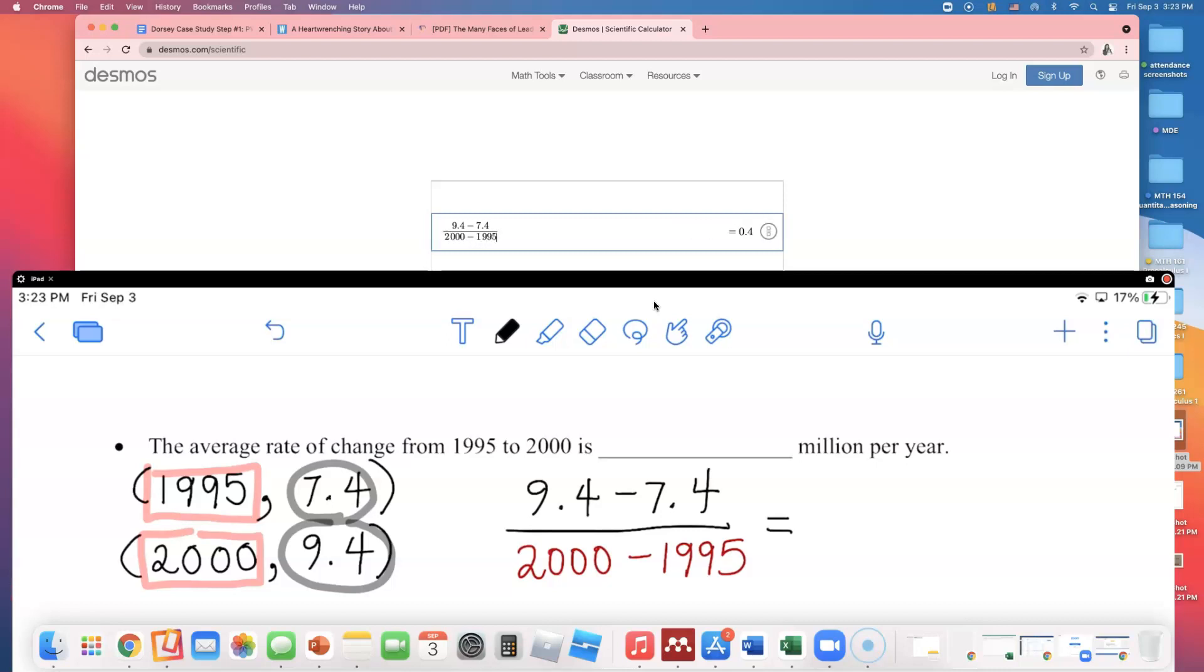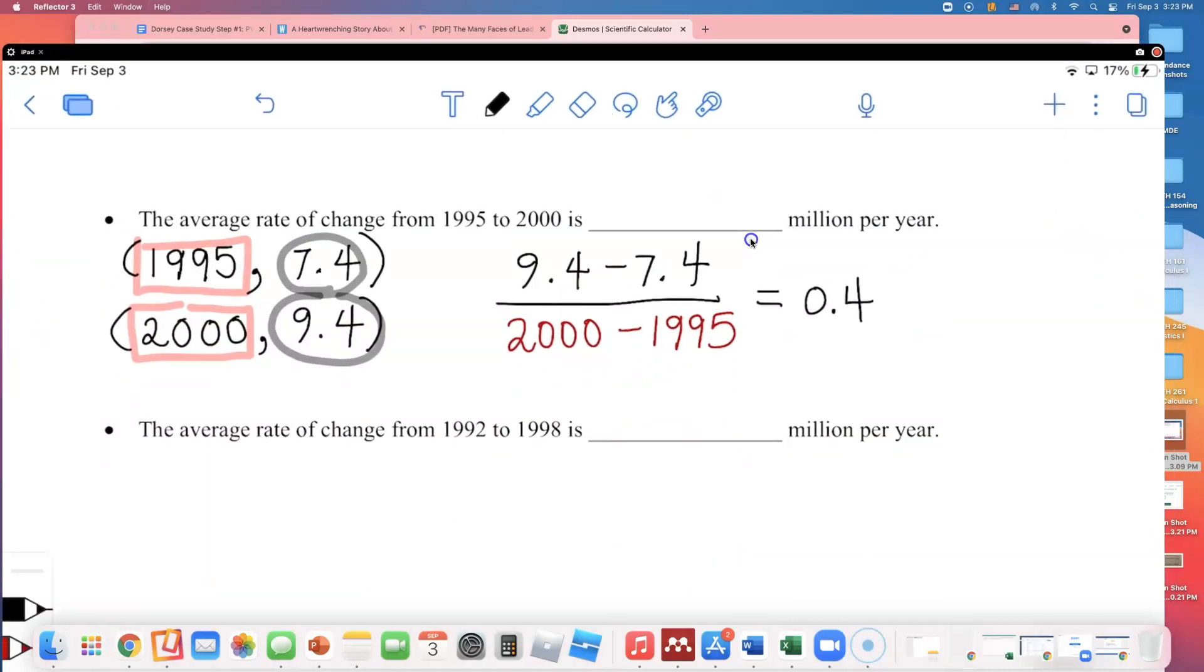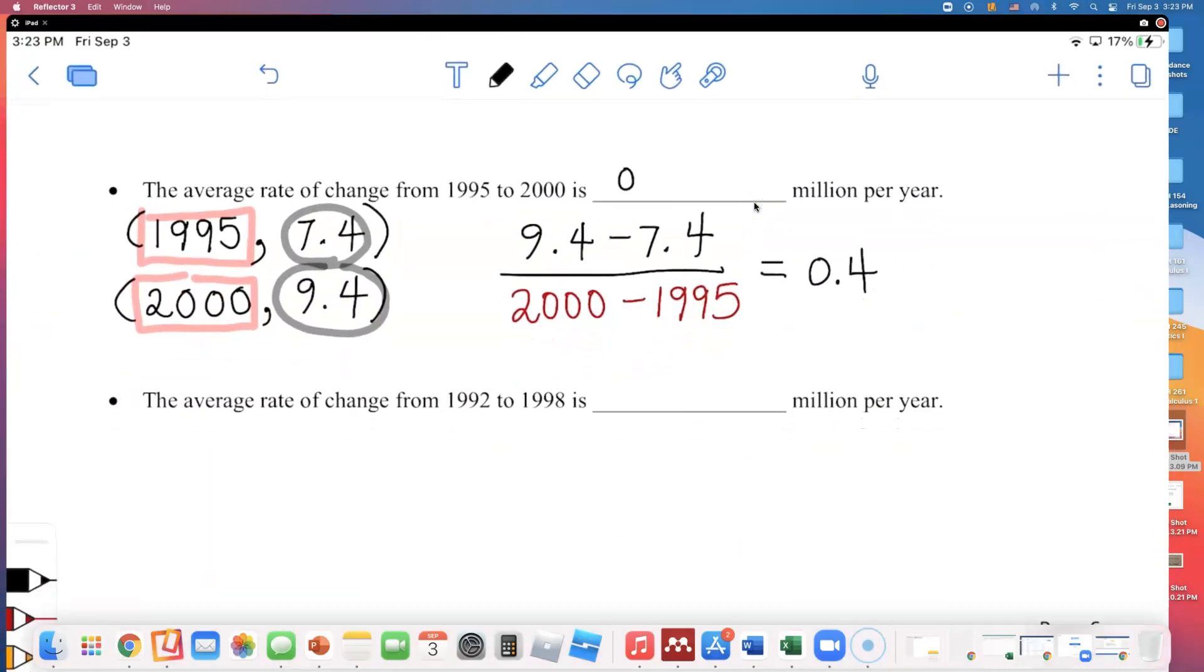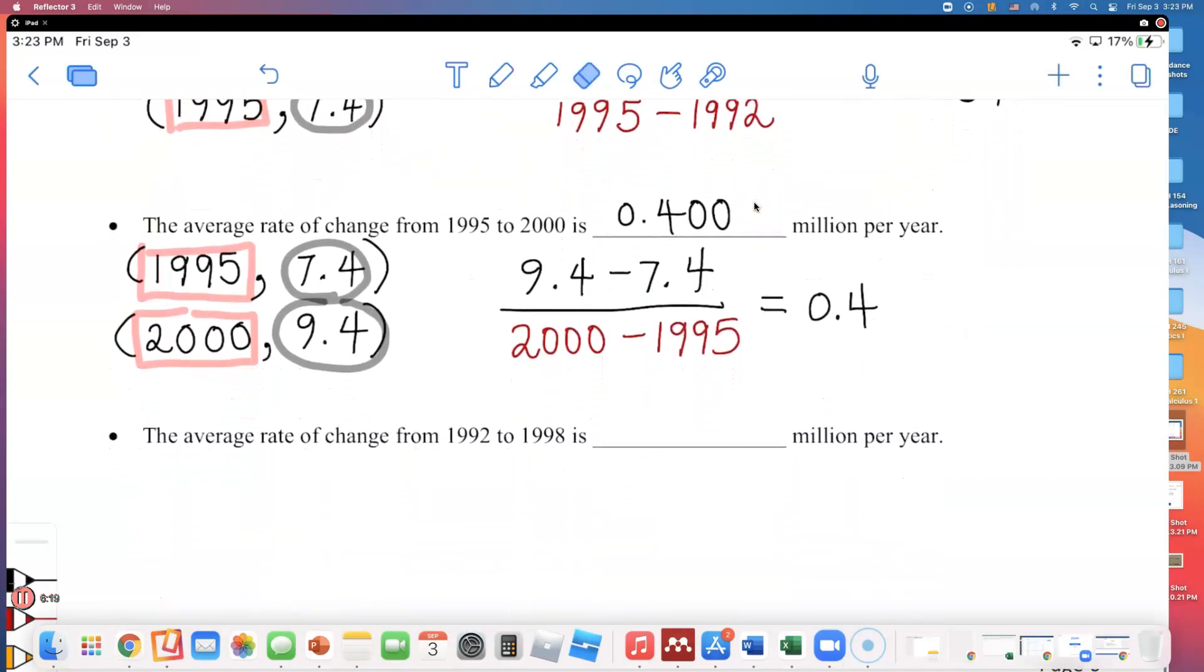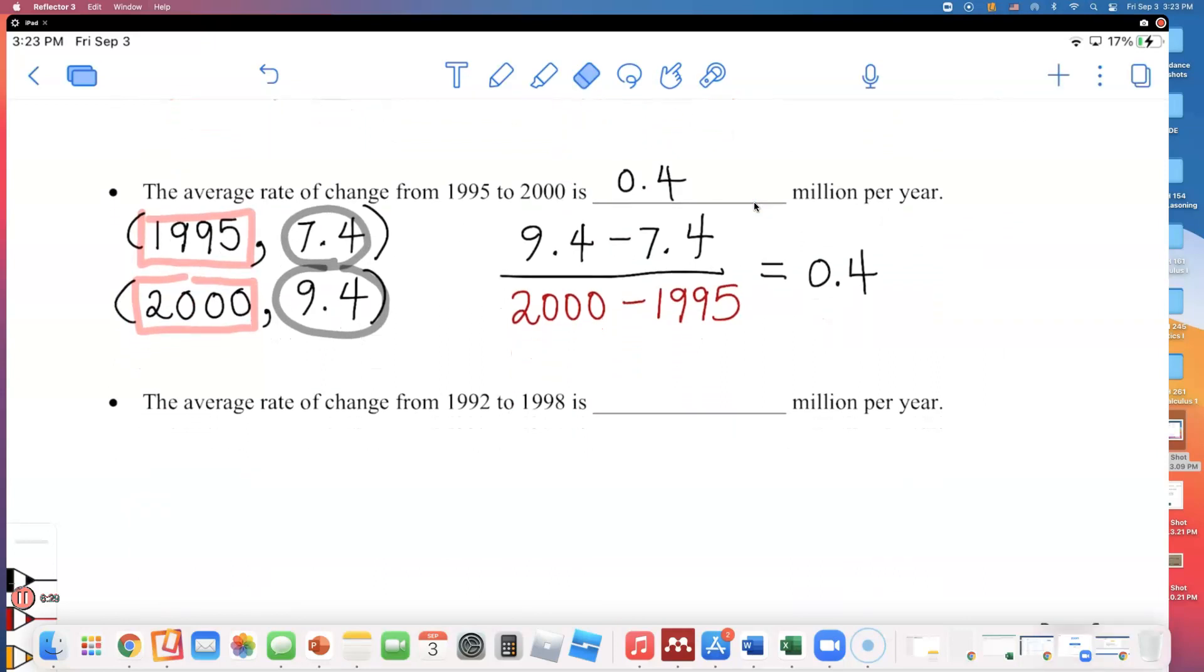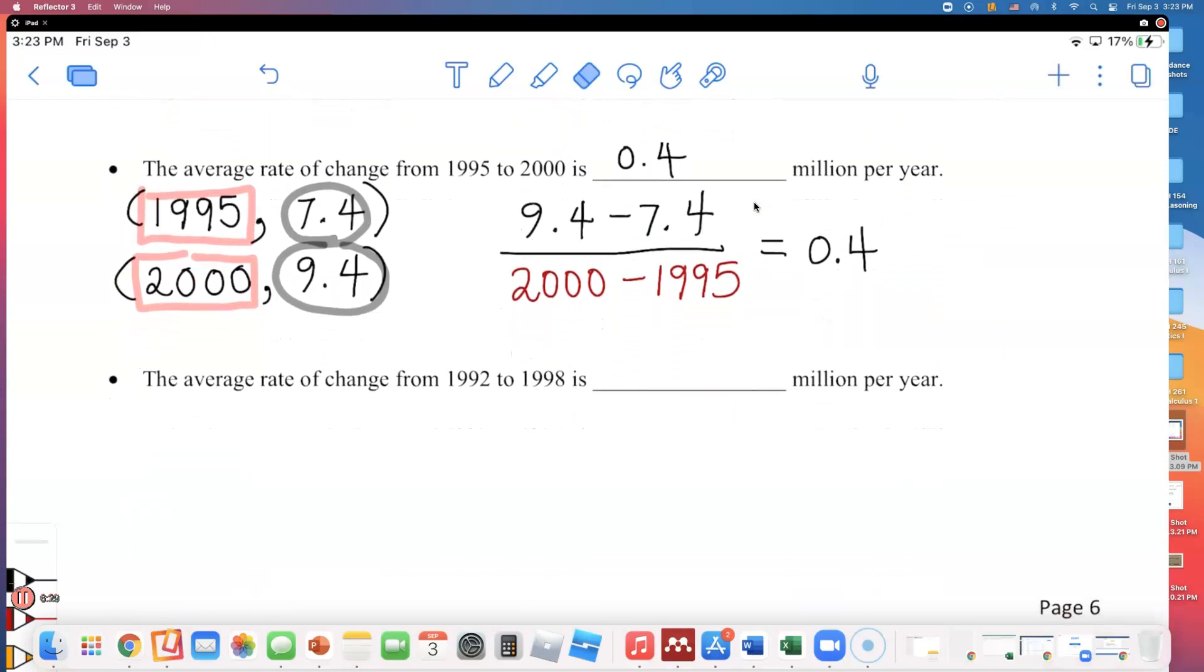And that came out, that's too clean. That is 0.4 million per year. So I'll write that down. The average rate of change from 1995 to 2000 is 0.4 million per year. I don't think we have to put two extra zeros just because I said round to three decimal places. Let's do the last one.